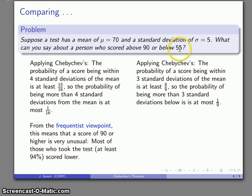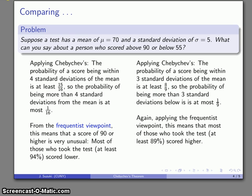And the bad news for the person who scored the 55: most of those scores are actually above theirs. So again, if we look at the problem from a frequentist viewpoint, this means that most of those who took the test, 8/9, because they're within three standard deviations of the mean, they're going to be higher than the score of 55. So about 89%, at least, of those who took the test are going to have done better than this person who scored a 55.